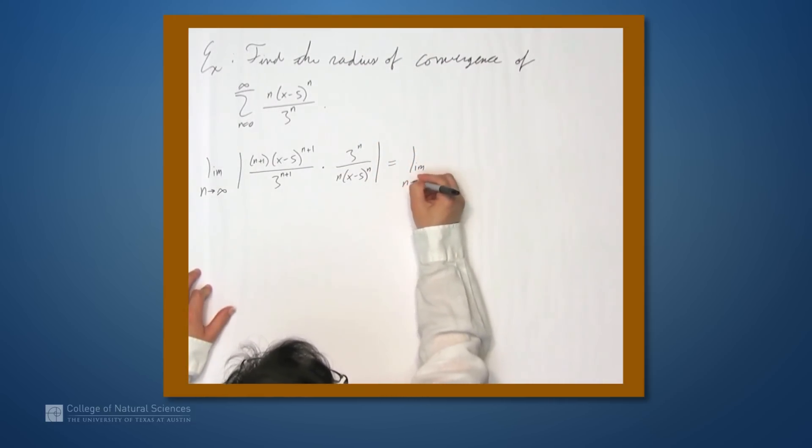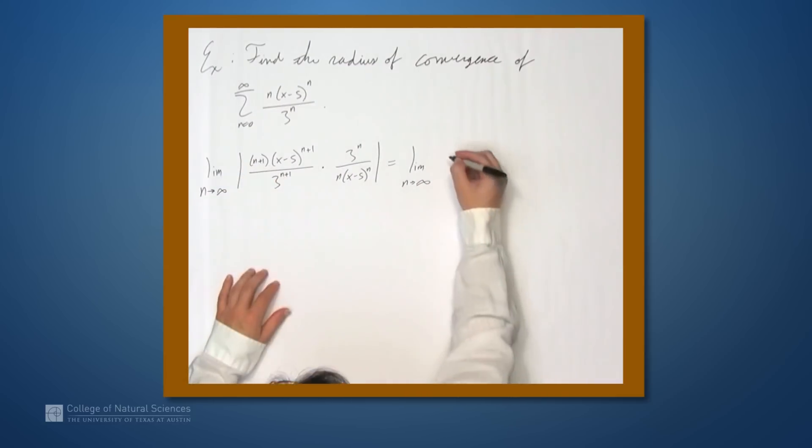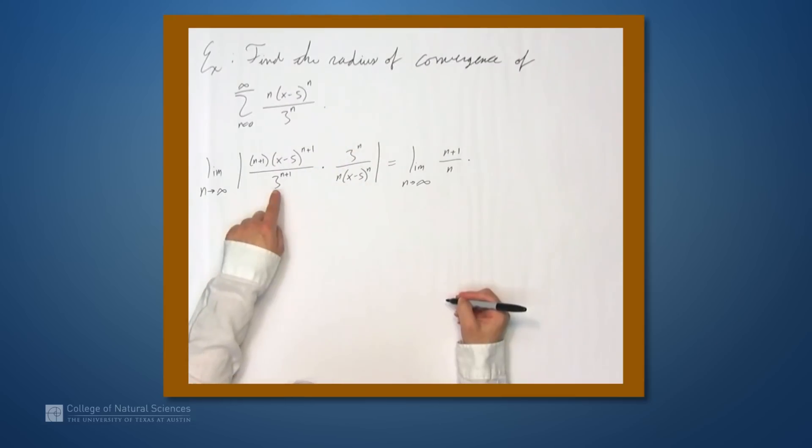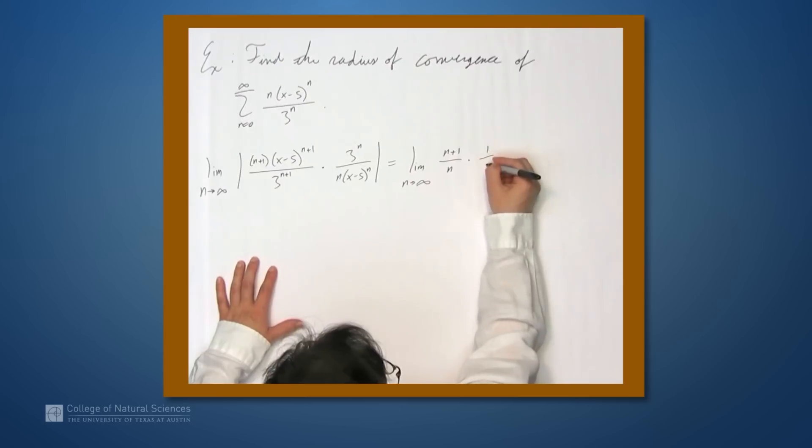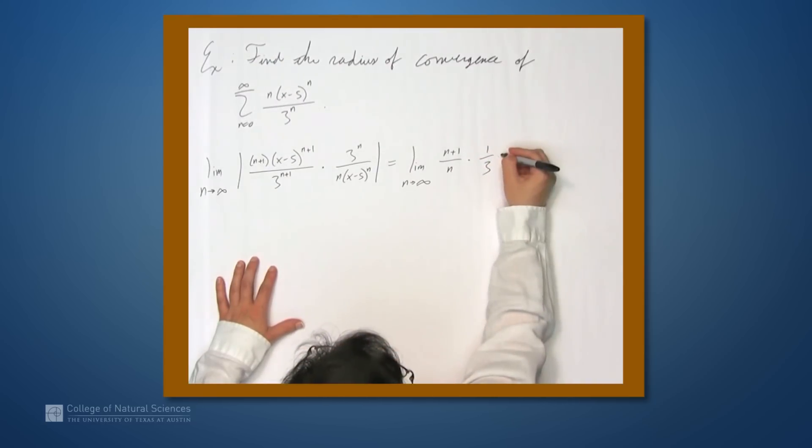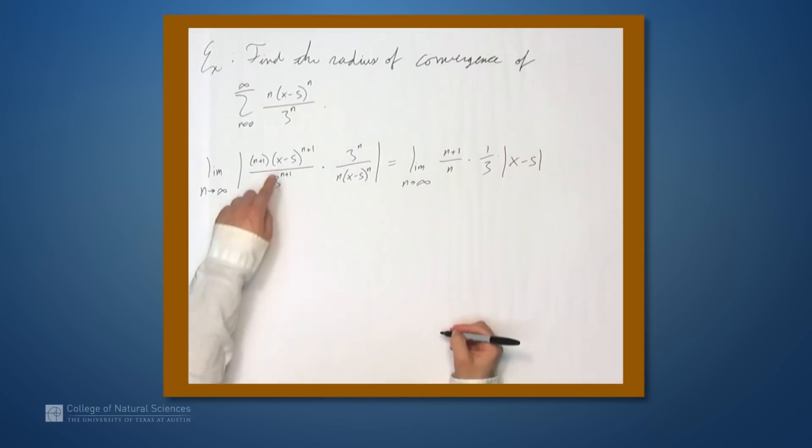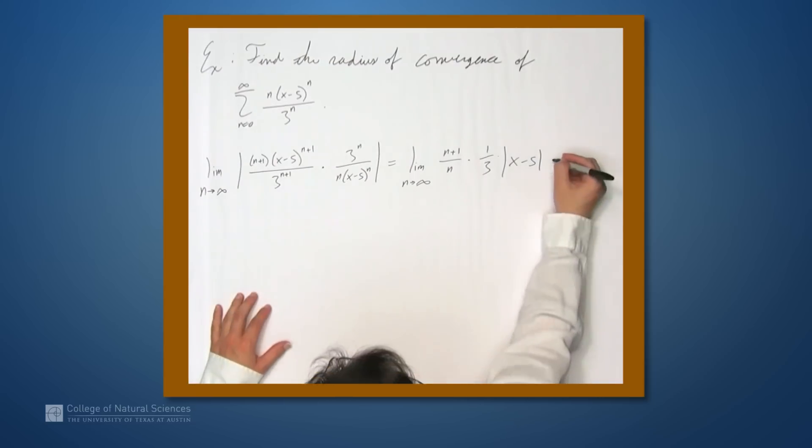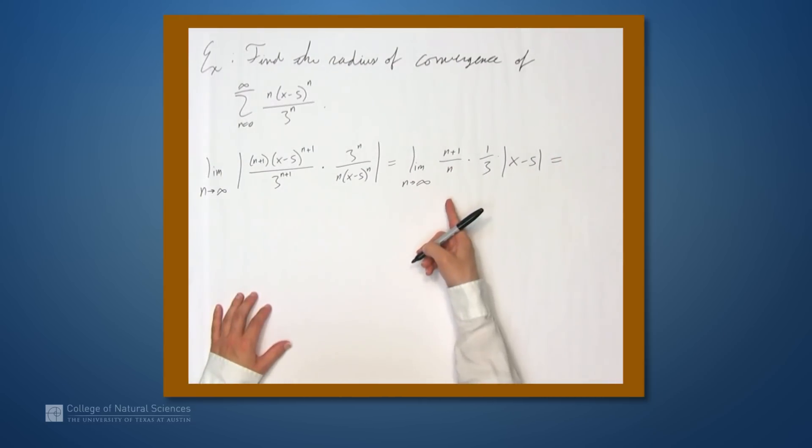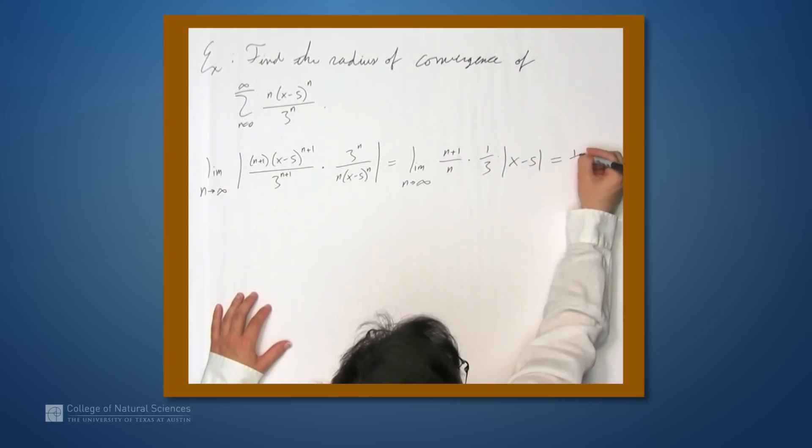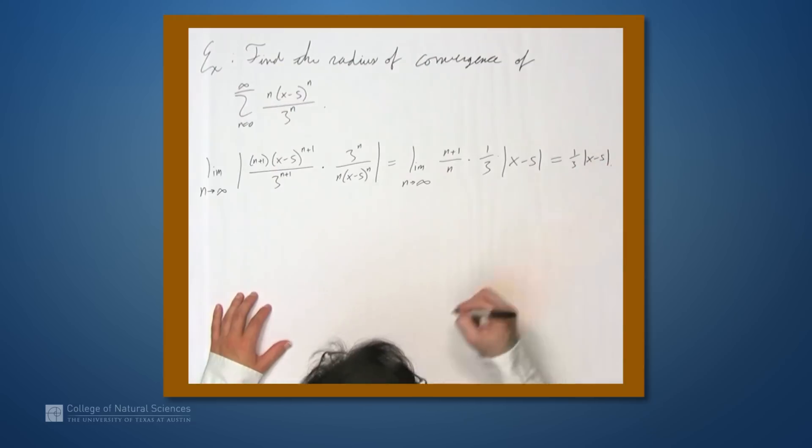This is the limit as n approaches infinity. We'll group the (n+1) and the n together, so we get (n+1)/n. We have 3^n over 3^(n+1), which gives us 1/3, times the absolute value of x-5. Because (x-5)^(n+1) over (x-5)^n is just x-5. As n approaches infinity, the only thing involving n is (n+1)/n, and the limit of that is 1. So we're left with (1/3)|x-5|.